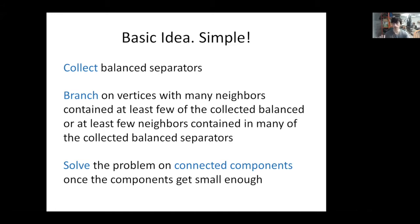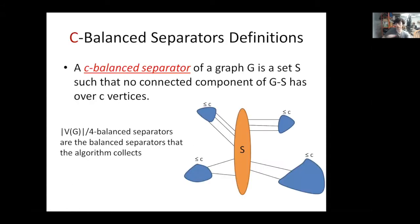Let me give a few definitions before going in depth into the algorithm. Our first definition is a C-balanced separator. A C-balanced separator of a graph G is a set S such that no connected component of G minus S has over C vertices. The balanced separators our algorithm collects are specifically n/4 balanced separators — sets S such that no component of G minus S has over one-fourth of the vertices of G.